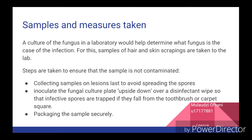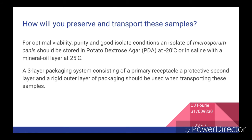Steps that should be taken so the sample does not contaminate the environment and is not contaminated are as follows: collecting samples or lesions should be done last so that it does not contaminate the rest of the body. Inoculate the fungal culture plate upside down over a disinfected wipe so that the infective spores are trapped if they fall. Package the sample securely — the sample should be packaged twice so that no spores can escape or no contaminants can enter. For optimal viability, purity and good isolate conditions, an isolate of Microsporum canis should be stored in potato dextrose agar at negative 20 degrees Celsius, or in saline with a mineral oil layer at 25 degrees Celsius. A three-layer packaging system consisting of a primary receptacle, a protective second layer and a rigid outer layer should be used when transporting these samples.